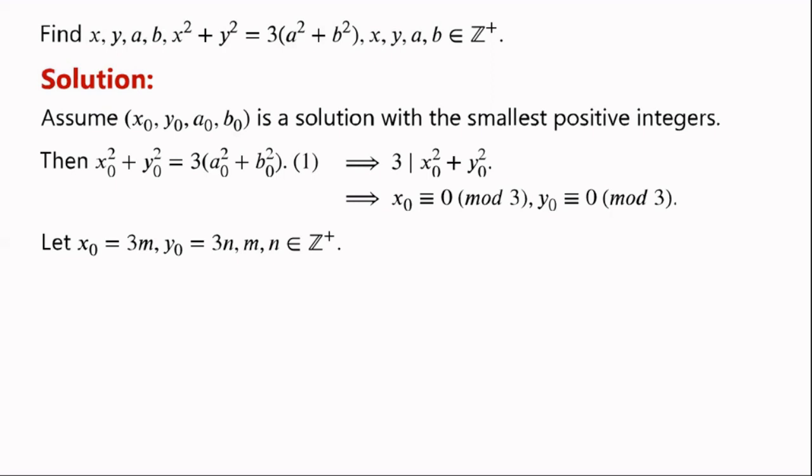We let x0 equal 3m, y0 equal 3n, where m, n are positive integers.